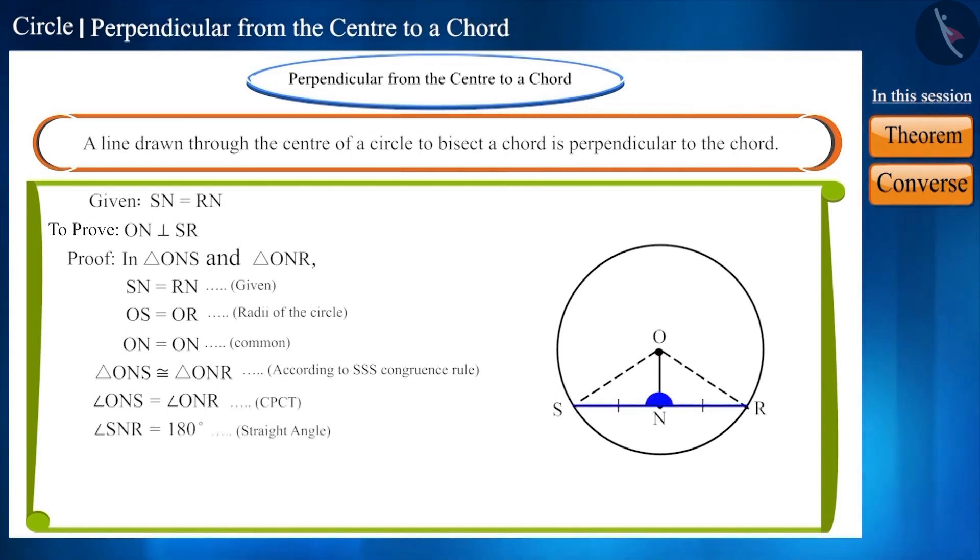Angle SNR is a straight angle. Therefore, it will be equal to 180 degrees. And angle SNR is formed by joining both these angles and both are also equal. Therefore, we can say that both these angles are right angles, that is, of 90 degrees. Therefore, the segment ON will be perpendicular to chord SR. This statement is true.